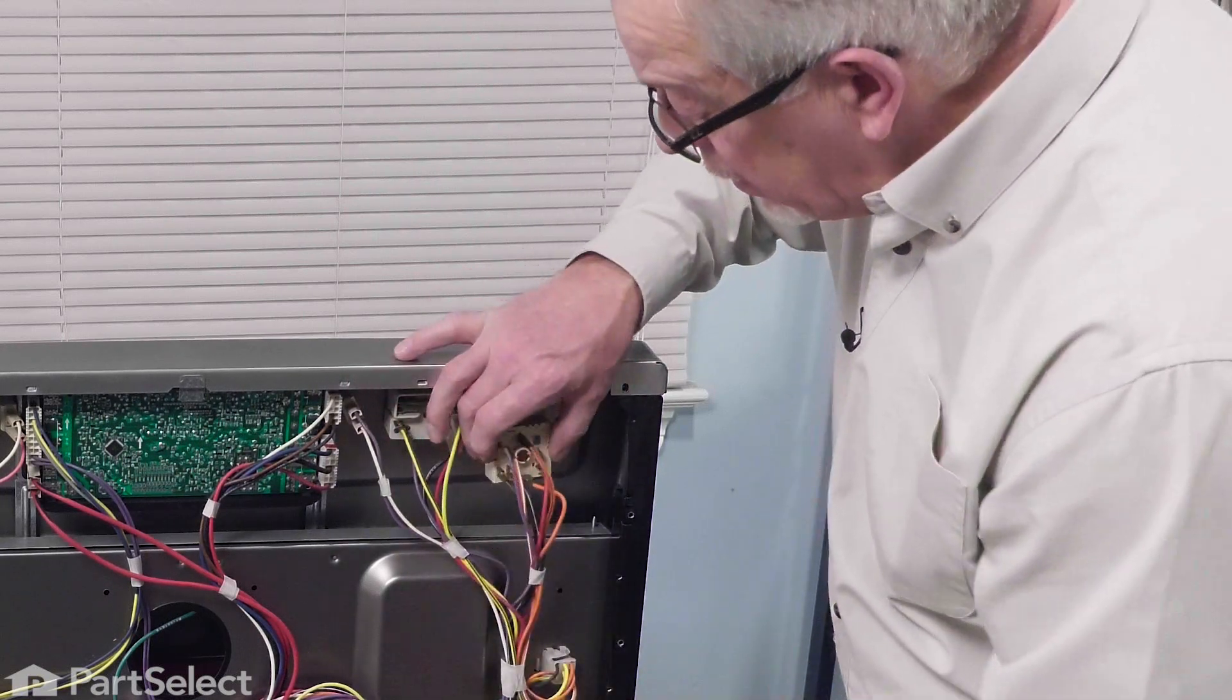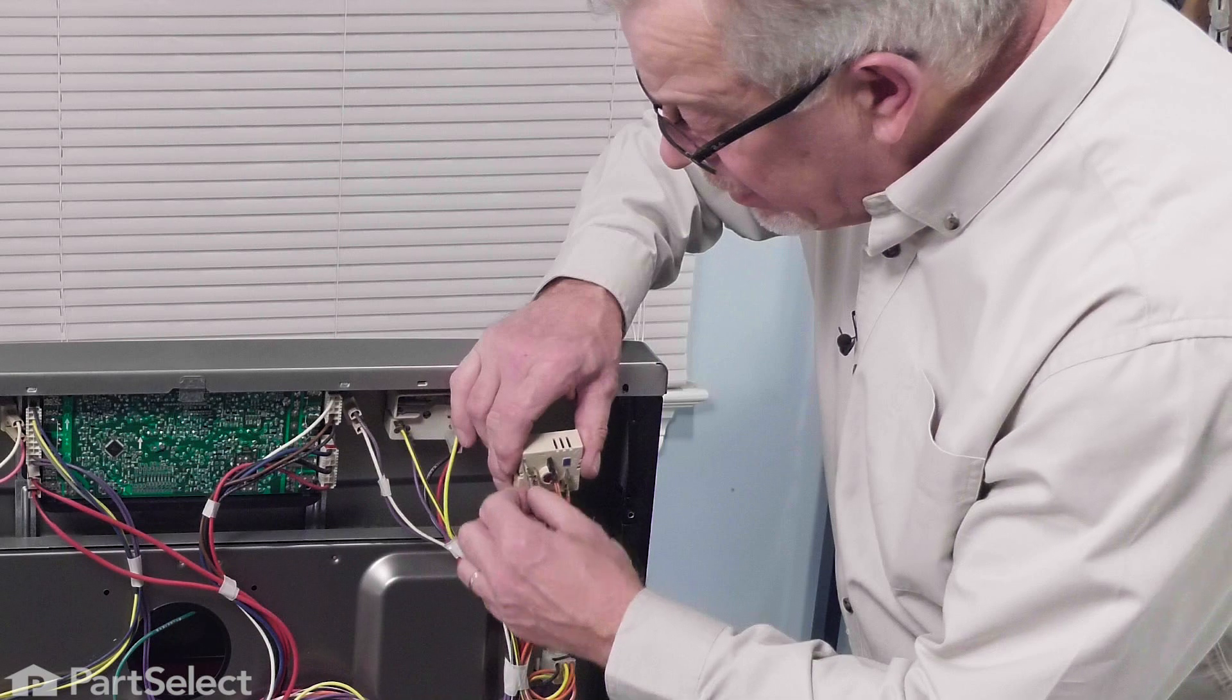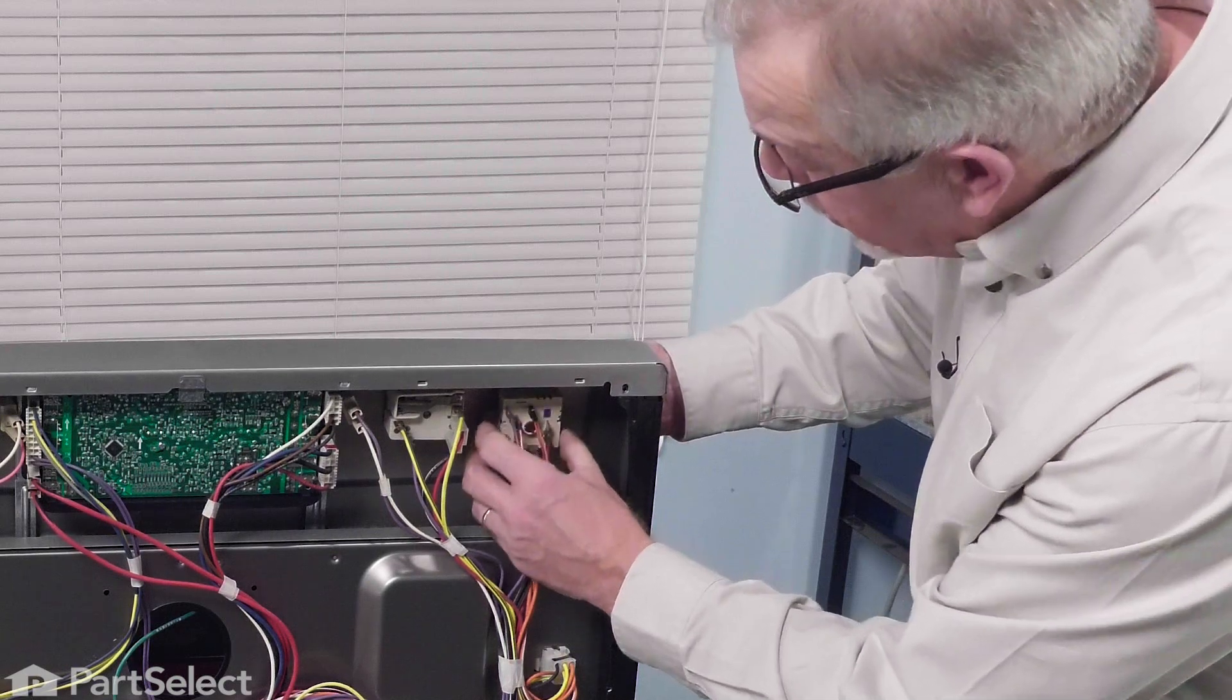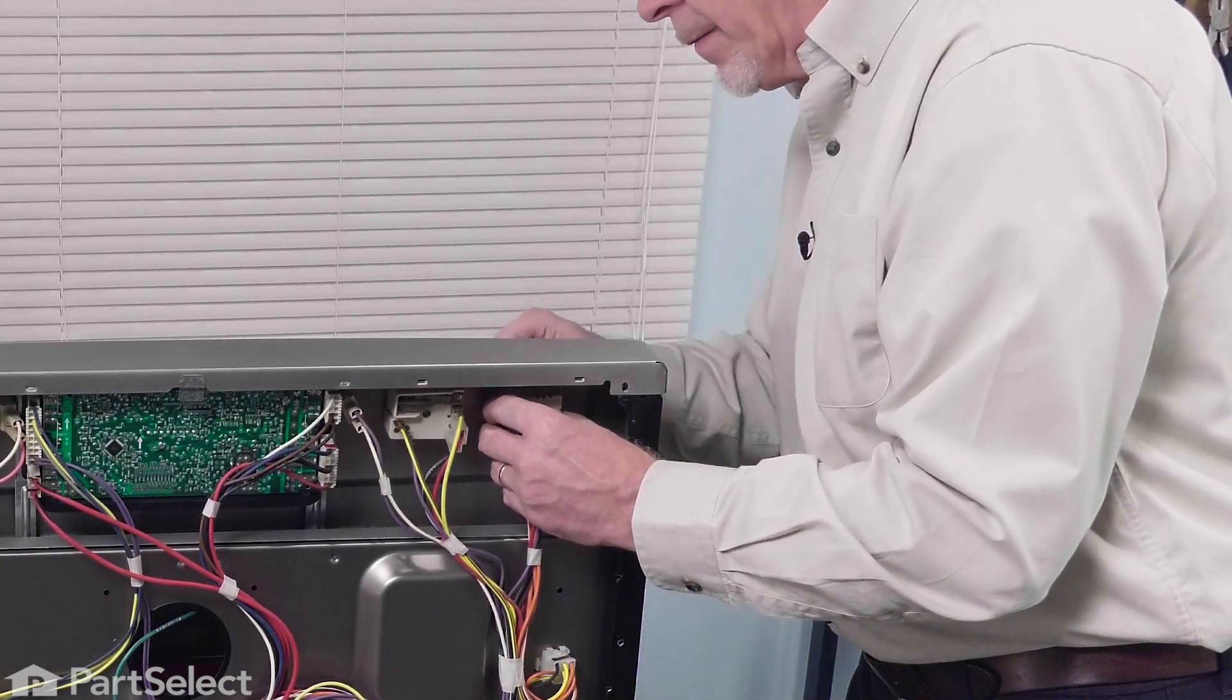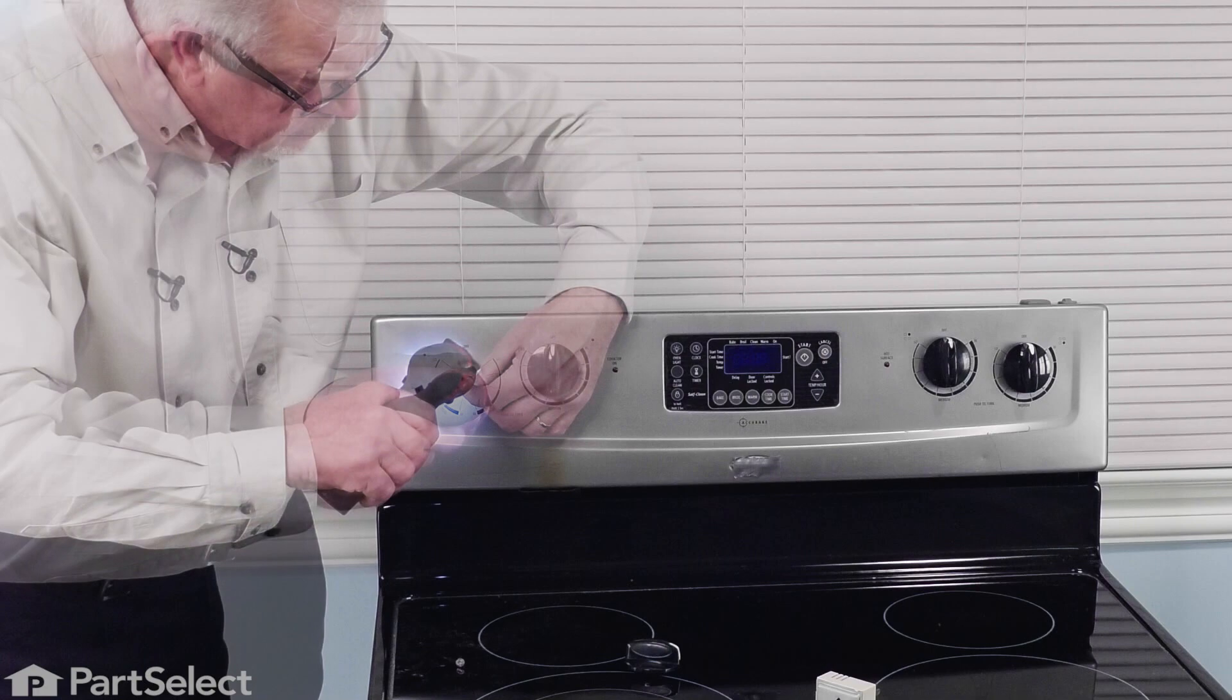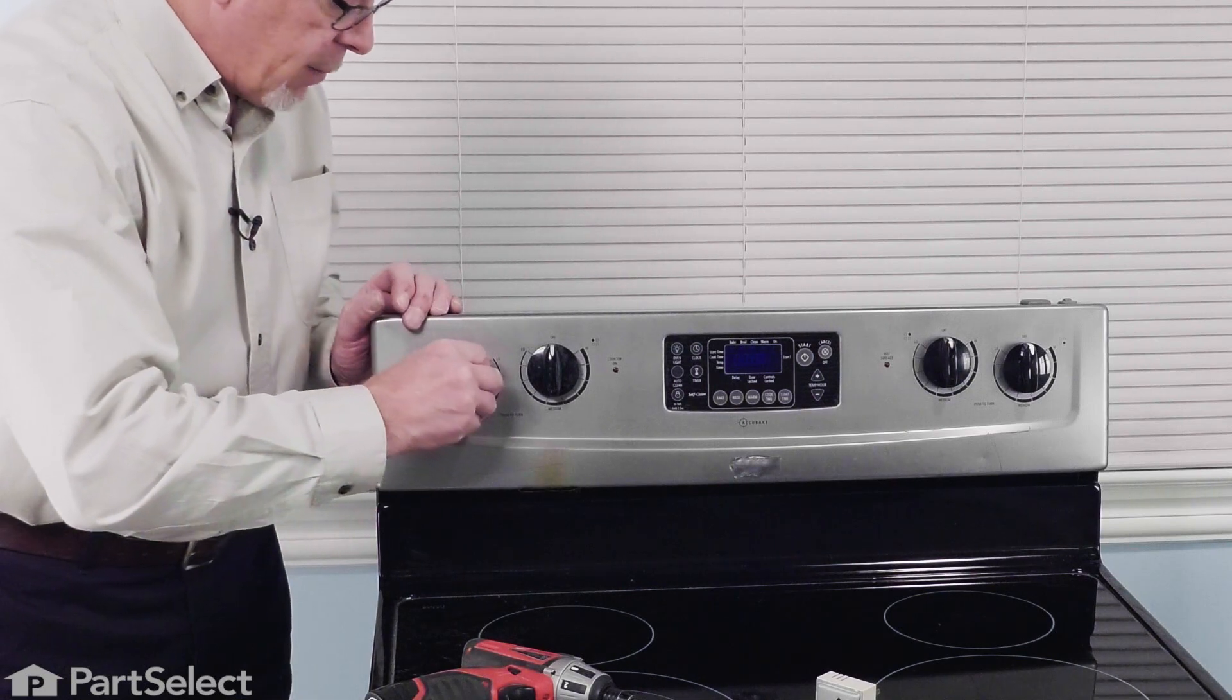Now, once we have all of the wires installed in the proper places on that control, just verify that none of them are loose, then insert through the hole in the control panel, line up, and then install the mounting screw from the front. Just line that control up so that the screw holes line up properly, tighten them securely, and then we can reinstall the knob.